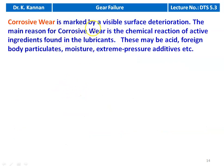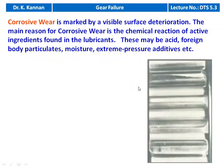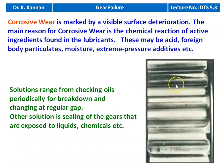Corrosive wear is marked by visible surface deterioration. The main reason is the chemical reaction of active ingredients found in the lubricants, which may include acid, foreign body particulates, moisture, or extreme pressure additives. The wear removal of material is caused by the corrosive nature of the lubricant or its additives. Solutions include checking oil periodically for breakdown and changing it at regular intervals, and sealing gears that are exposed to liquids and chemicals.